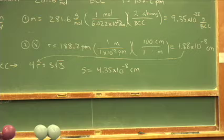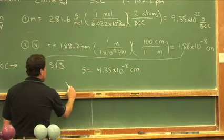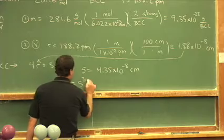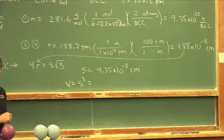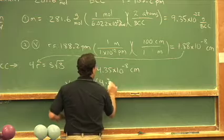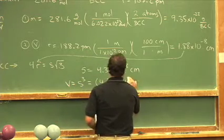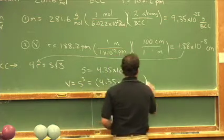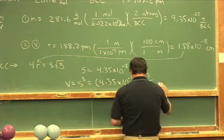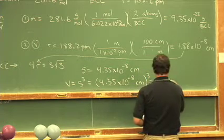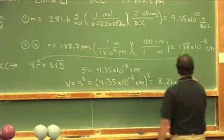Well, one final step for the volume. Volume is equal to the side cubed, so volume is equal to the side cubed. So we'll go ahead and cube this number. 4.35 times 10 to the negative eighth centimeters cubed. And I calculate this to be 8.21 times 10 to the negative 23.